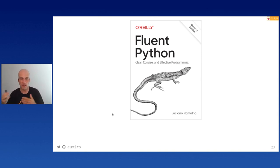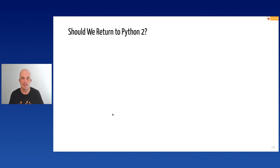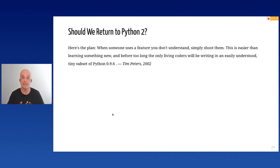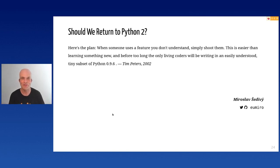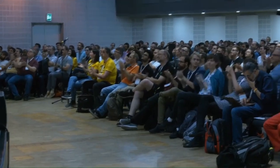It's actually the best second book on Python available — disclaimer: I'm one of the technical reviewers. So, should we return to Python 2? Do you want to keep the backdoors in your code? Here's the plan: when someone uses a feature you don't understand, simply shoot them — this is easier than learning something new. Before too long the only living coders will be writing in an easily understood tiny subset of Python 0.96. That's all — thank you very much!